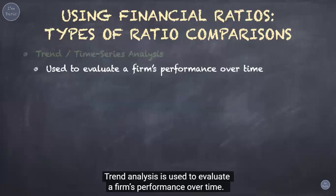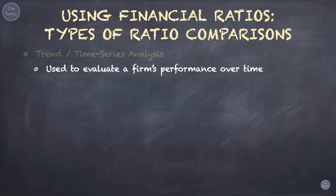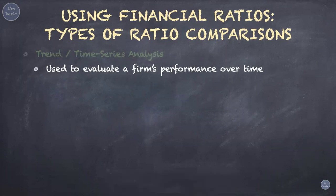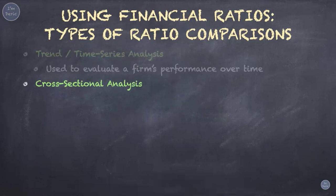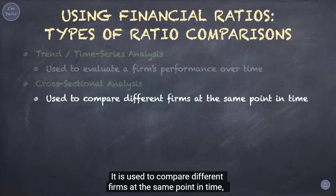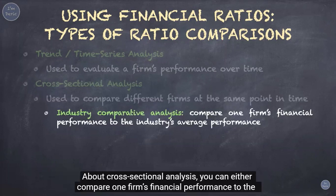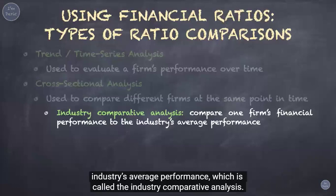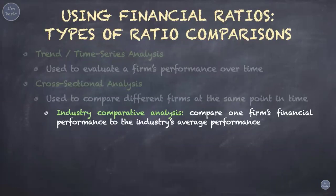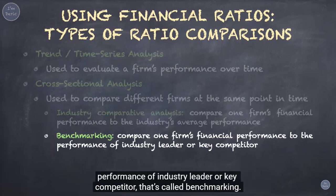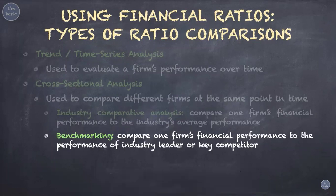Trend analysis is used to evaluate a firm's performance over time — to compare the performance of one company over many years. The second type is cross-sectional analysis, used to compare different firms at the same point in time, meaning it compares the performance of many companies in the same year. For cross-sectional analysis, you can either compare one firm's financial performance to the industry's average, called industry comparative analysis, or compare to the performance of an industry leader or key competitor, which is called benchmarking.